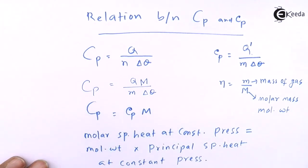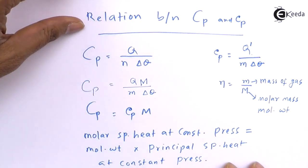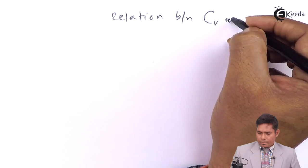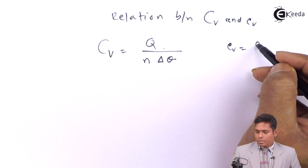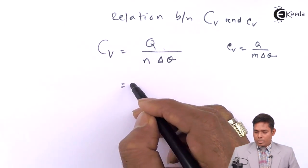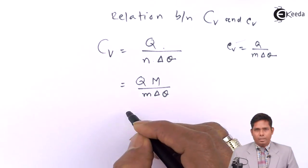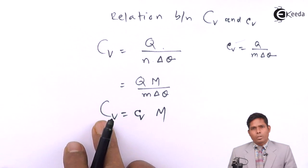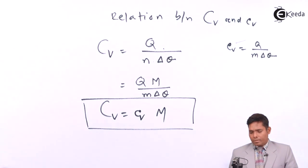Similarly for Cv, the relation between capital Cv and small cv is derived the same way. Capital Cv equals the heat supplied for n moles and delta theta, with n replaced by mass over molar mass. This gives capital Cv equals small cv times capital M. So the molar specific heat at constant volume equals the molecular weight times the principal specific heat at constant volume.